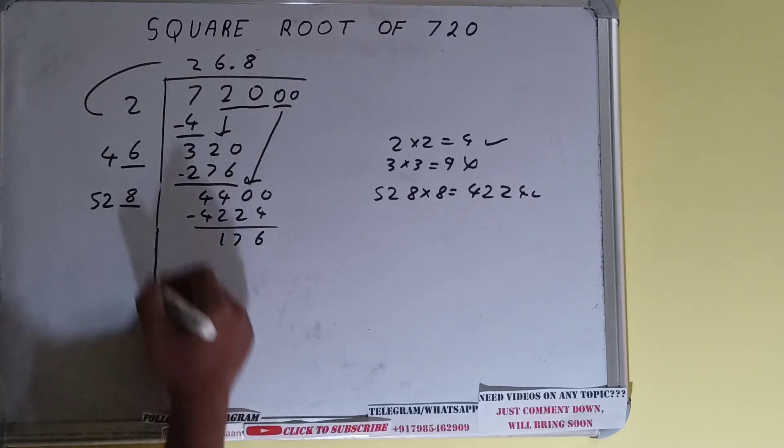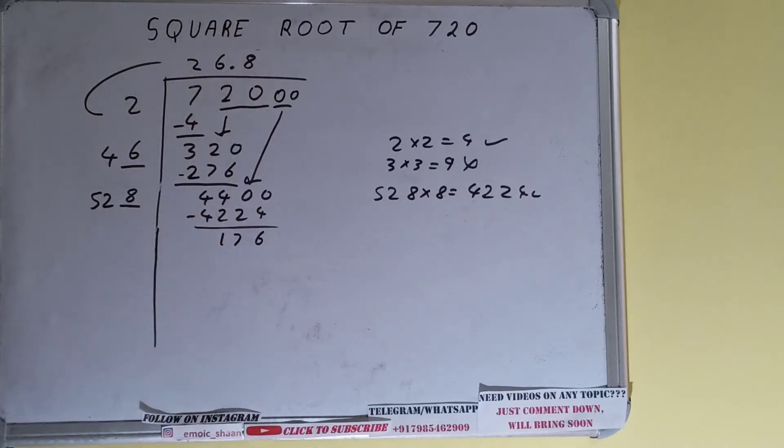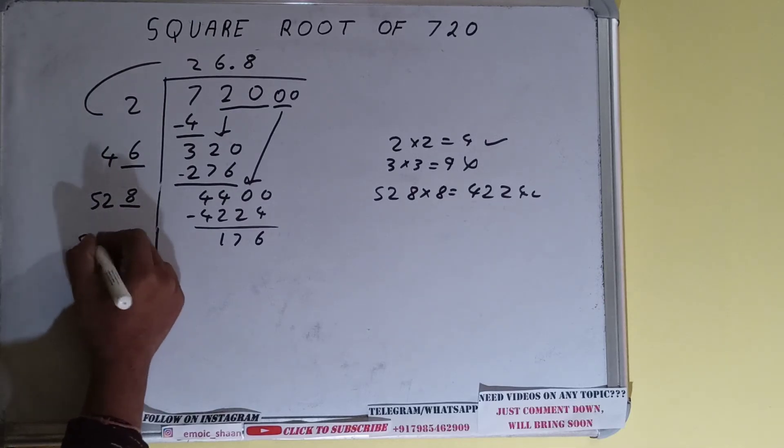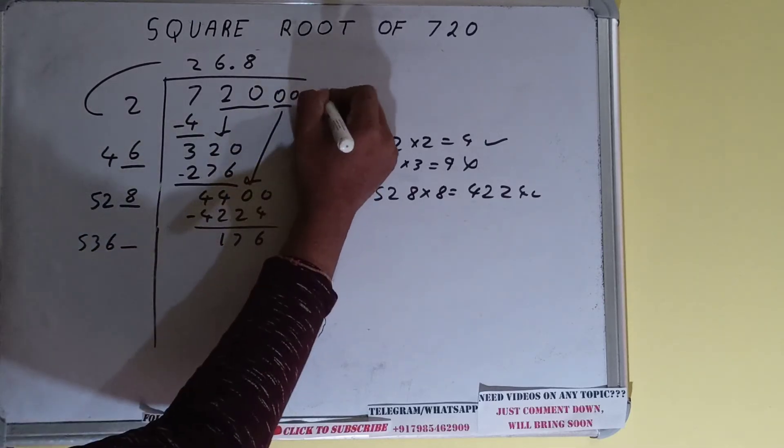And 176 will be left. Now 528 into 8 we did, so add both, so 528 plus 8 will be 536 and 1 digit extra. And this number we need to make it big, so bring the next pair of zeros down and it will become as 17600.